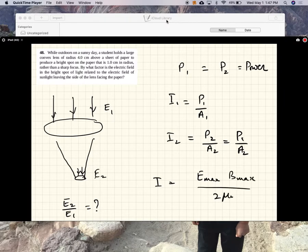And B_max is E_max over c, so E_max square over 2 mu naught c. So the intensity is, intensity of the beam is related to the amplitude of the electric field like that.